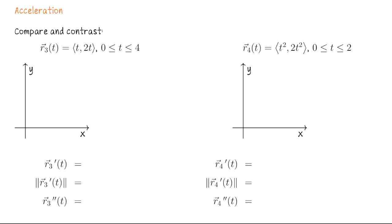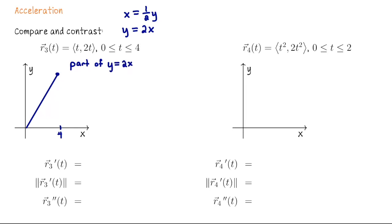Now consider R3(t) = (t, 2t) for t from 0 to 4. Since x = t and y = 2t, we have y = 2x, so this sweeps out a line segment on y = 2x from x = 0 to x = 4. The velocity vector is the constant (1, 2), so the speed is a constant √5. Because the velocity vector is completely constant in both magnitude and direction, the acceleration vector is zero.